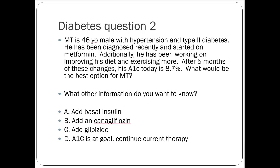The answer to this case depends on which additional information is provided — I didn't give you enough to pin down a specific answer, which was intentional. If A1C were 9%, that might point toward insulin. Diminished renal function would steer you away from SGLT2 inhibitors. I want to show how each piece of information drives decision-making rather than a blanket scenario.